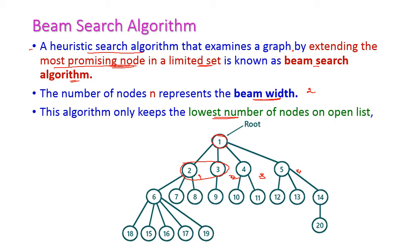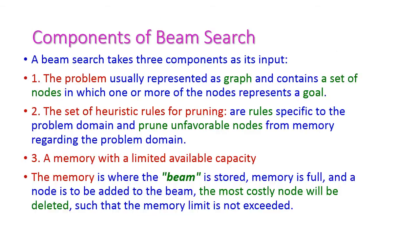The algorithm keeps only the lowest number of nodes in the open list. As per our example, beam width equals two, so only these two nodes will be selected for the open list. The components of beam search are: first, the problem; second, a set of heuristic rules for pruning; and third, memory with limited available capacity.